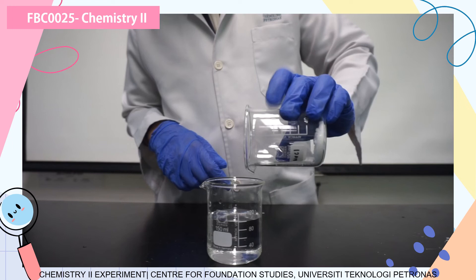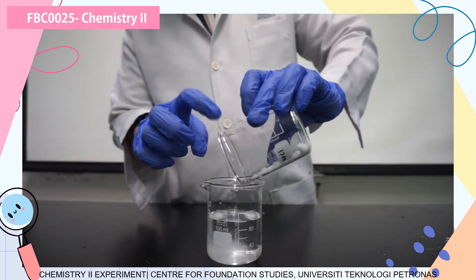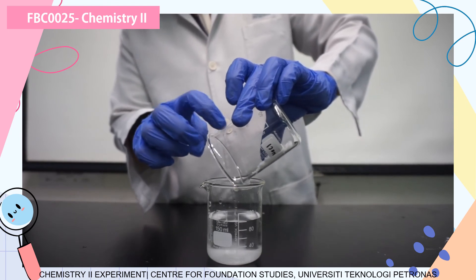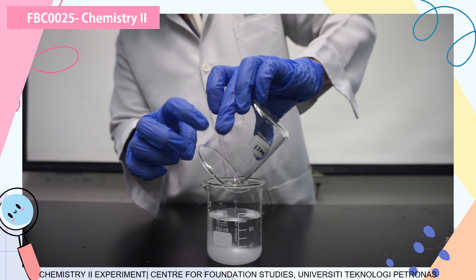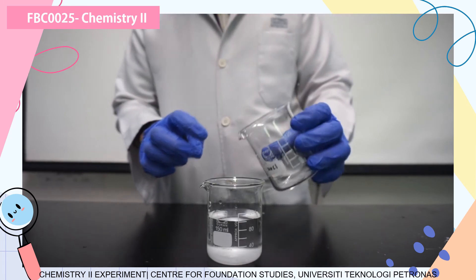Once you have completed determining the boiling temperature of your water, we are going to add the solute into it. You have to be careful because it's hot water there. We are going to add the sodium chloride with the measurement as given in the lab manual. Once you put it in, you are going to stir it so that the sodium chloride will dissolve.